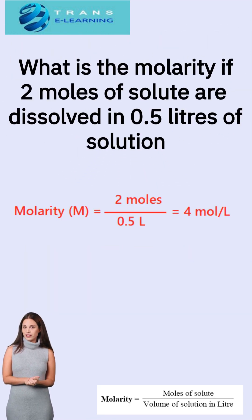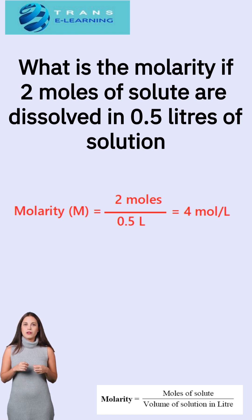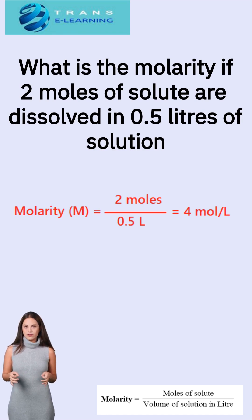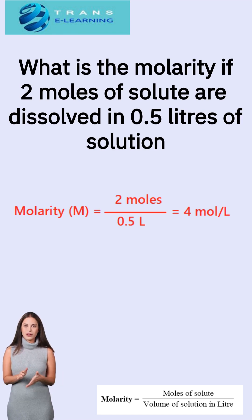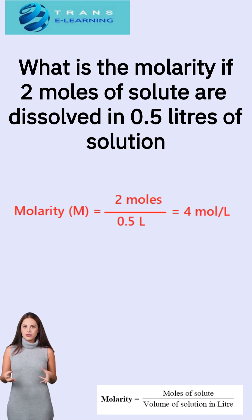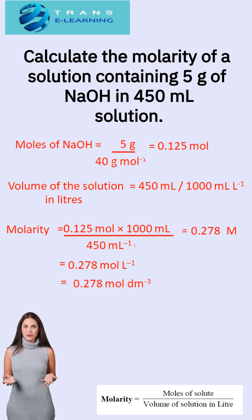Question: What is the molarity if 2 moles of solute are dissolved in 0.5 liters of solution? We can calculate this using the number of moles of solute, which is 2 moles, divided by the volume of solution in liters, which is 0.5 liters. So we get 4 moles per liter as the answer.